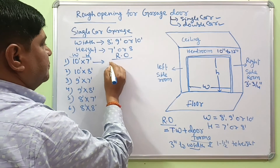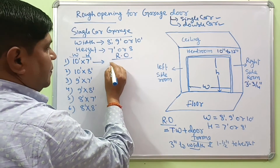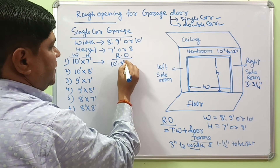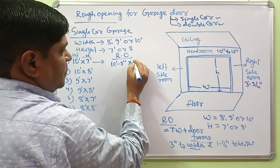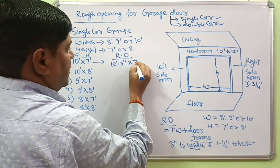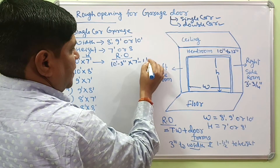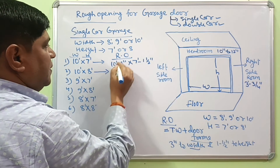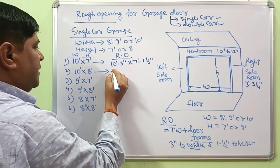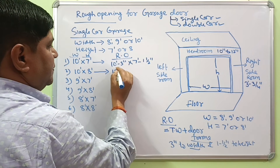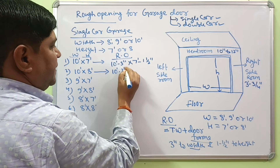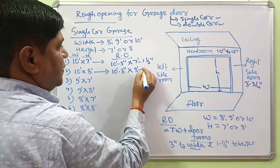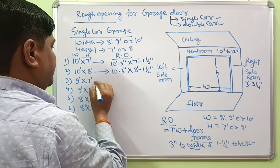For a 10x7 foot single car garage, the rough opening will be 10 foot 3 inches by 7 foot 1 and a half inches. For a 10x8 foot garage, the rough opening will be 10 foot 3 inches by 8 foot 1 and a half inches.